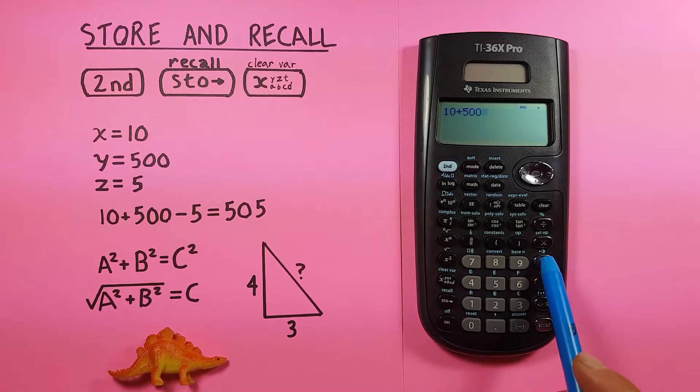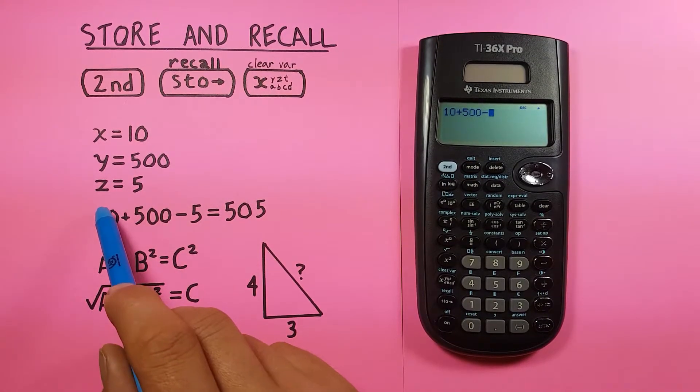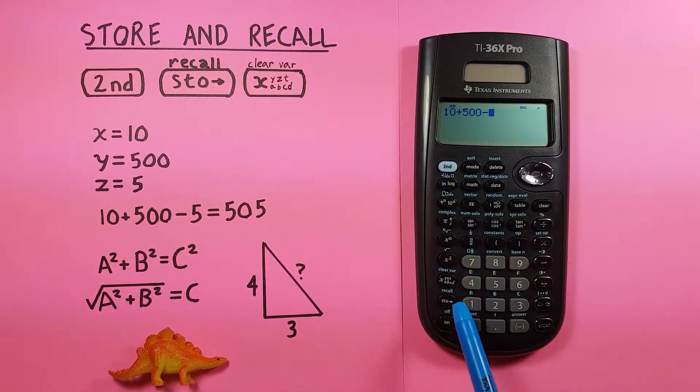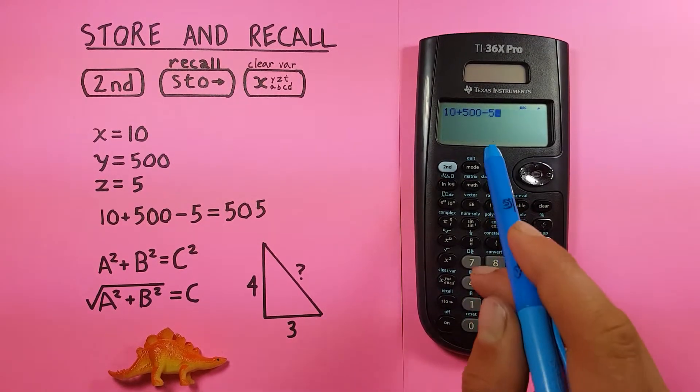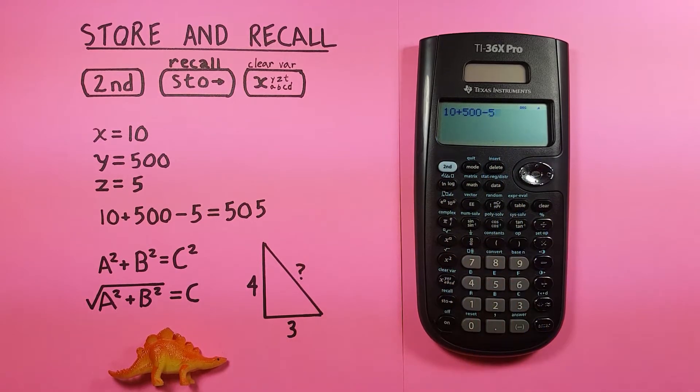Minus the 5, which was our Z value, so again, second function, recall, and this time we'll just press 3, because it was the third value there, and there we have it, 10 plus 500 minus 5. Press enter, and you can see we get 505, which is correct.